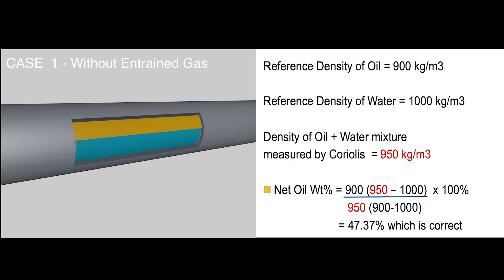Case 1: where just oil-water emulsion is flowing. We have the reference density of oil at 900 kg/m³ and reference density of water at 1000 kg/m³. The density of the oil and water mixture measured by the Coriolis flow meter is 950 kg/m³. According to the equation, the net oil weight percentage is calculated as 47.37%, which is correct.